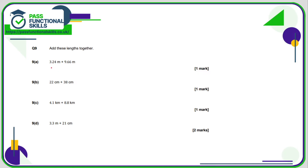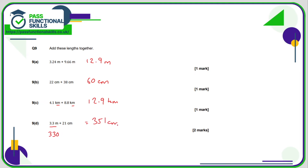Question 9 — we can use a calculator. 3.24 plus 9.66 comes to 12.9 metres. 22 centimetres plus 38 centimetres comes to 60 centimetres. 4.1 plus 8.8 comes to 12.9 kilometres — it's worth checking you have the same units on either side. For D, the units differ, so either convert the metres into centimetres or vice versa: 3.3 metres multiplied by 100 is 330 centimetres, so that's 351 centimetres in total, or equivalently 3.51 metres.